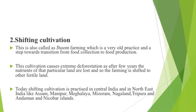Shifting cultivation, also called jhoom farming, is a very old practice and a step towards transition from food collection to food production. This causes extreme deforestation as after a few years the nutrients of that particular land are lost and farming shifts to other fertile land. Today, shifting cultivation is practiced in central India and northeast India including Assam, Manipur, Meghalaya, Mizoram, Nagaland, Tripura, and the Andaman and Nicobar Islands.